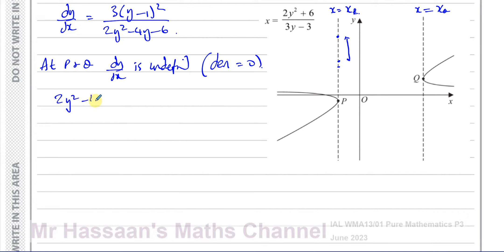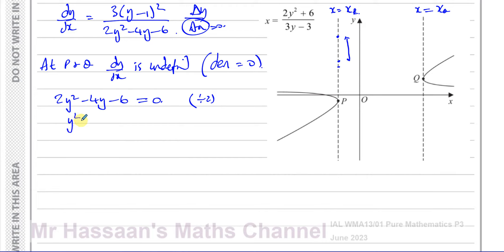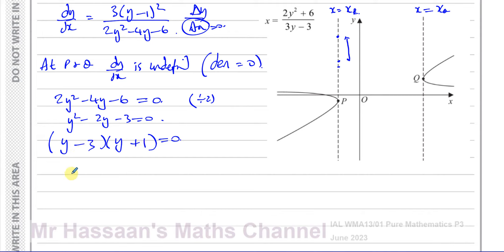So we set 2y squared minus 4y minus 6 equal to zero. Dividing through by 2 gives y squared minus 2y minus 3 equals zero. Factorizing: two numbers that multiply to minus 3 and add to minus 2 are minus 3 and plus 1, so we get (y minus 3)(y plus 1) = 0. Therefore y equals 3 and y equals minus 1 are the y-coordinates of points Q and P respectively.